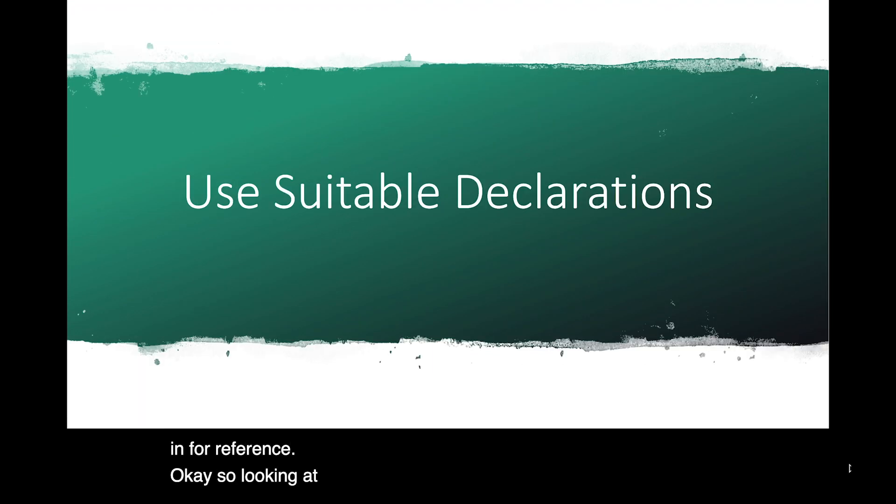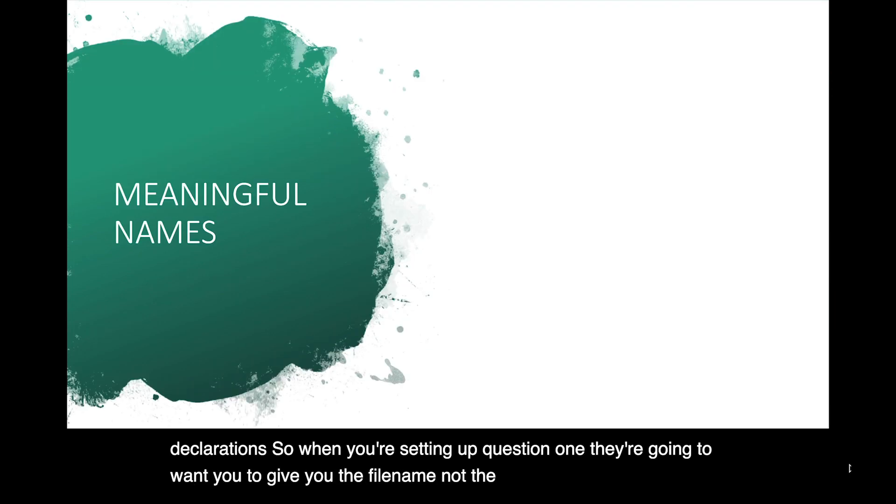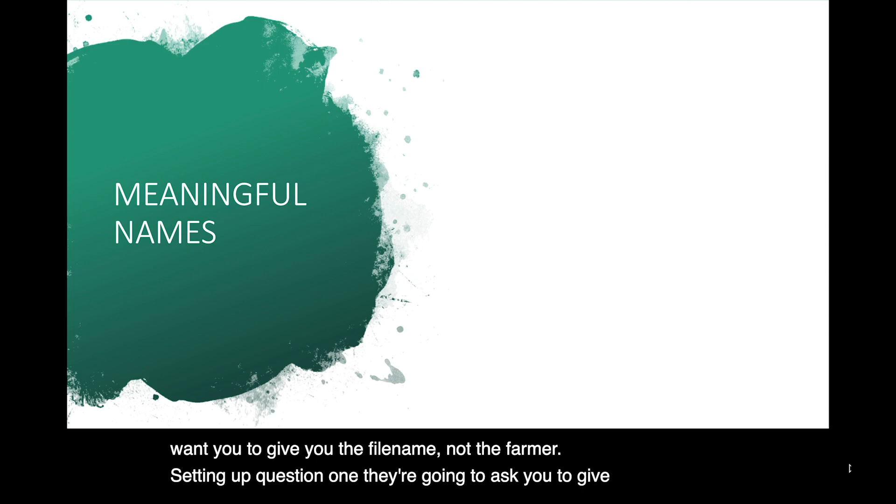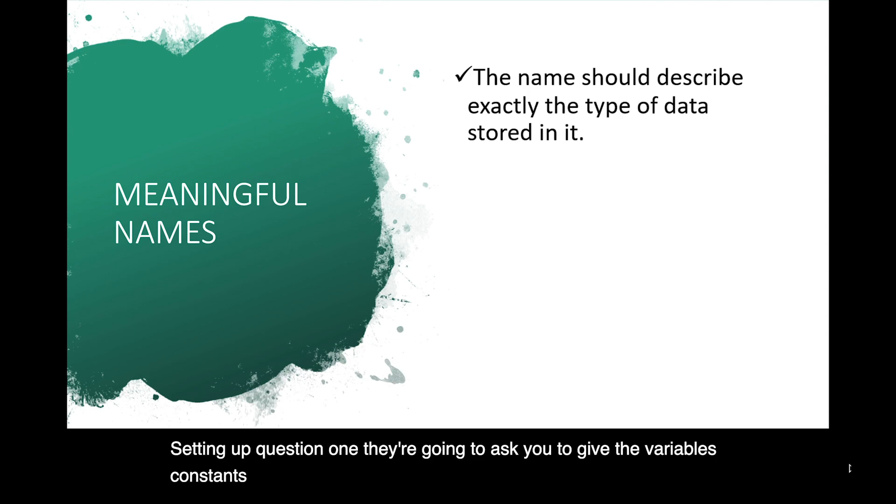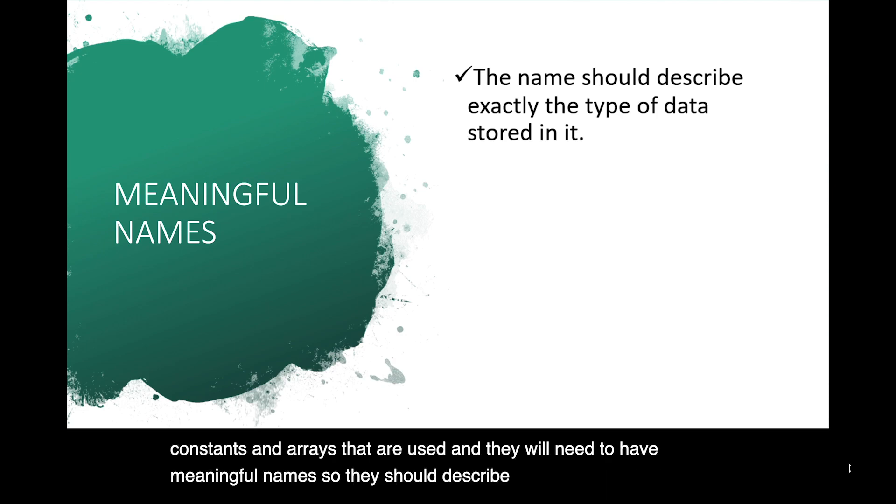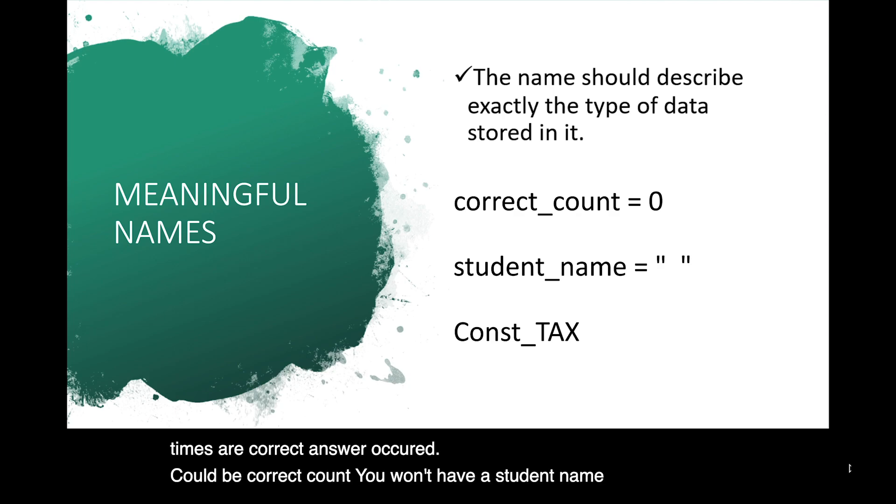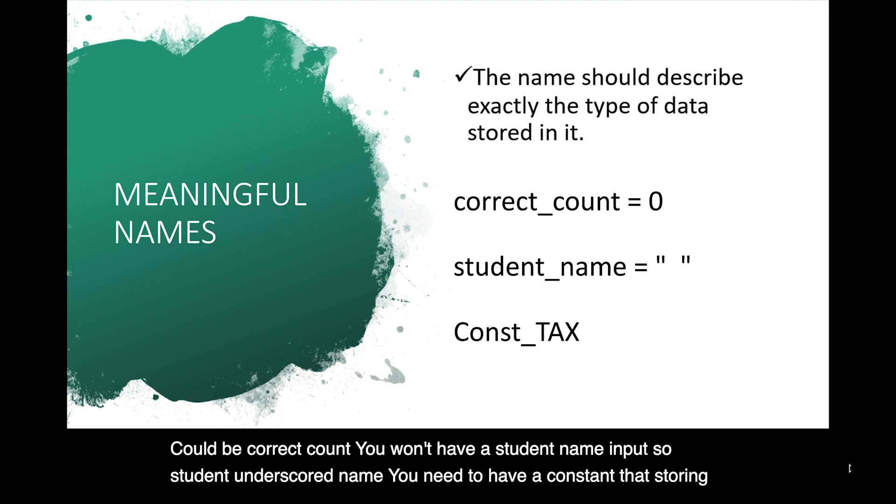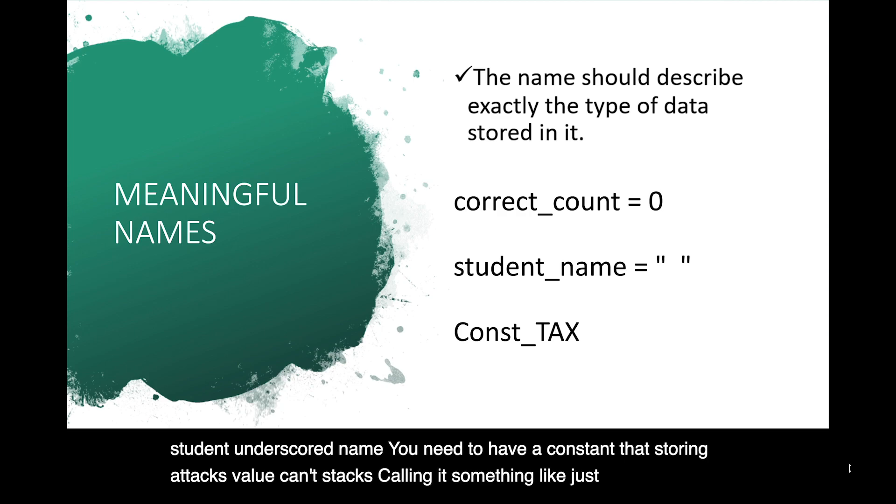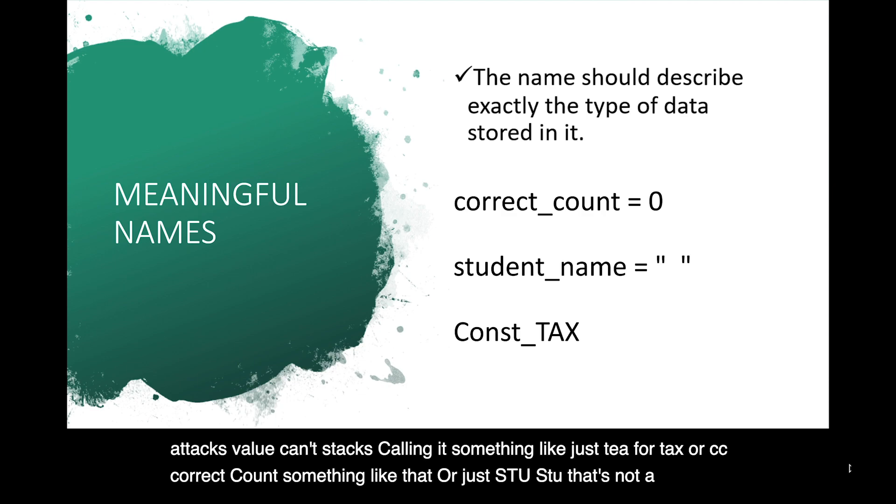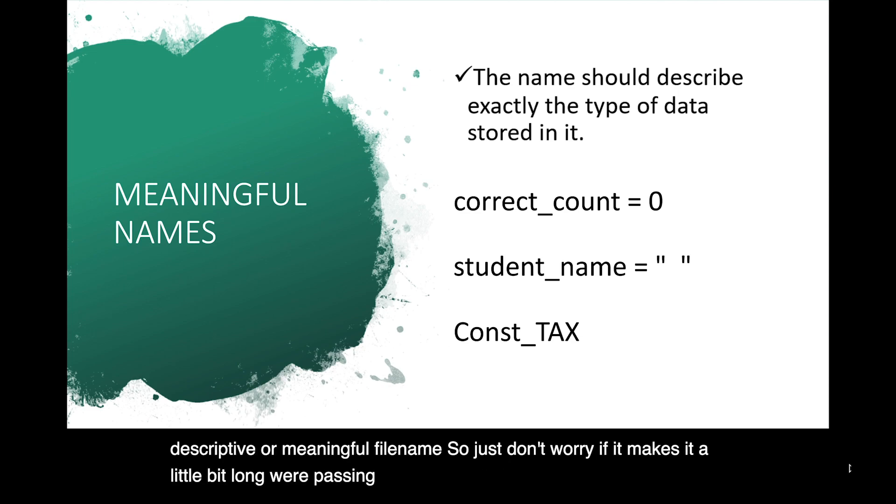Okay, so looking at this question one, let's talk about suitable declarations. When you're setting up question one, they're going to ask you to give the variables, constants, and arrays that are used. And they will need to have meaningful names. So they should describe exactly what the data is that is stored inside. Here's some examples. If you had, for example, the correct count. So you wanted to count how many times a correct answer occurred, could be correct count. You want to have a student name input. So student underscore name. You need to have a constant that's storing a tax value, const tax. Calling it something like just T for tax, or CC, correct count, or just STU. That's not a descriptive or meaningful file name. So just don't worry if it makes it a little bit long. We're passing an exam, put in a meaningful file name.